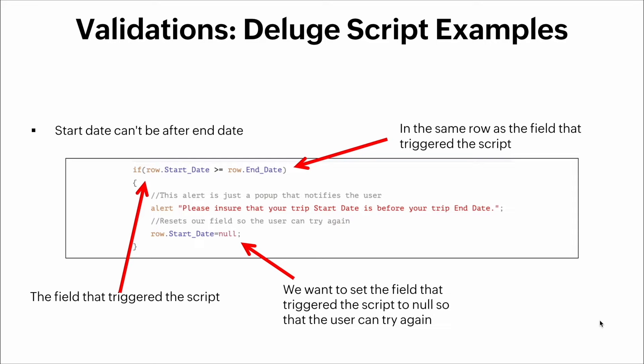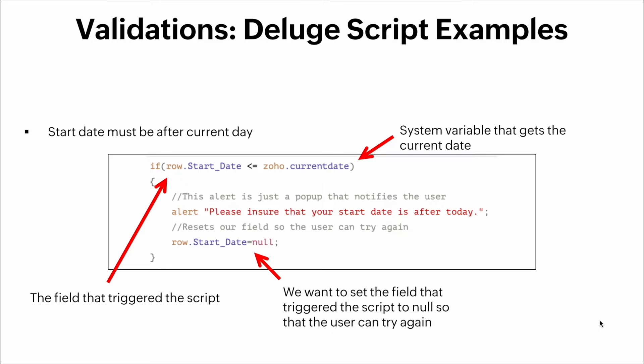Here's the Deluge script. We create a conditional and tell it that the fields are contained within a row in a subform. We say: if the start date field is greater than or equal to the end date field, display an alert telling the user to please ensure that the trip start date is before the trip end date. Then we set the value of the start date to `null` so the user can try again.